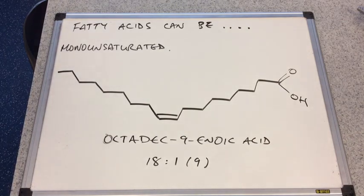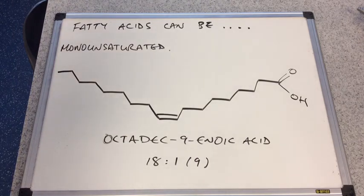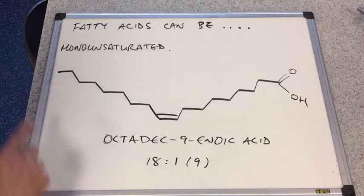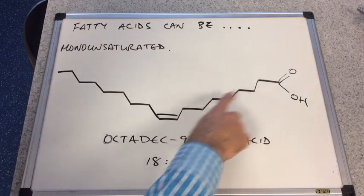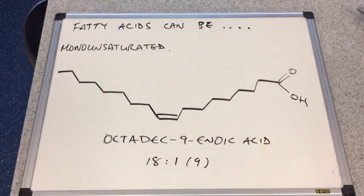Now you'll notice that I've drawn it in the cis form. And that's because, remember, these molecules occur in nature. And in nature, it's always the cis form that predominates. You don't tend to get the trans form in nature. Just the cis. Now we'll come on to trans fatty acids later on in the video. But just to remember that the cis form is the one that occurs in nature.